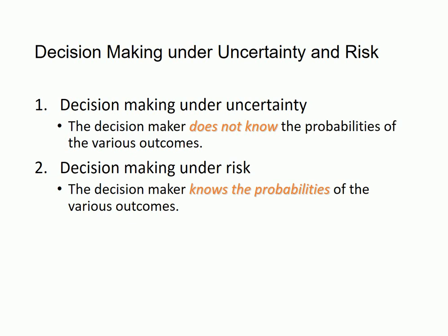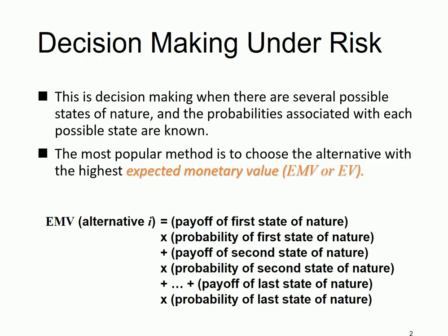Previously we talked about decision-making under uncertainty, which means you do not know the probabilities for possible outcomes. Now we're going to move on to the next one: decision-making under risk, which means that you know the probabilities of the possible outcomes. Now that you have the probabilities, you can make decisions based on something called expected monetary value, or EMV, or simply EV.